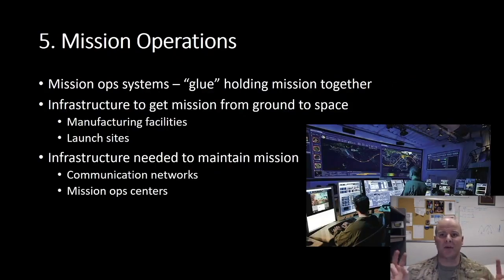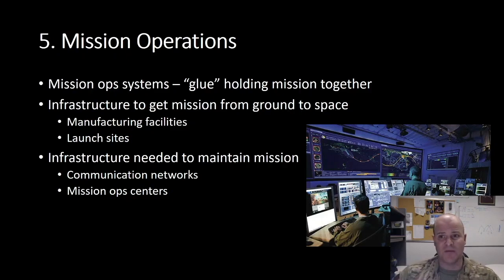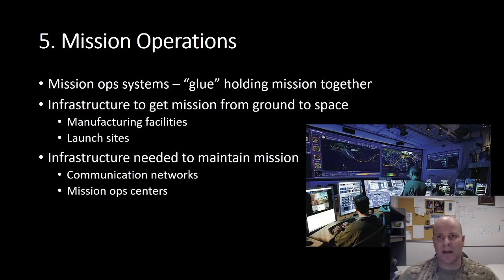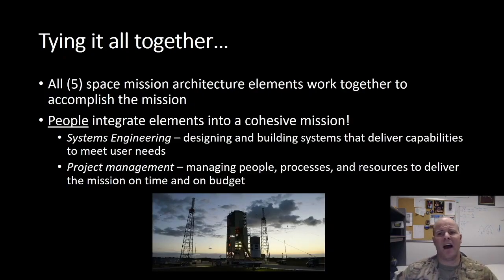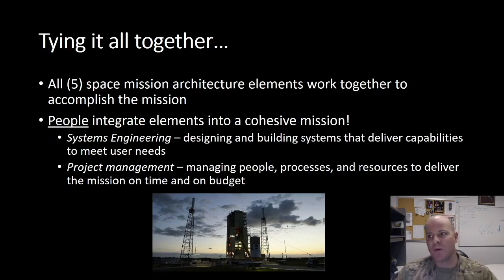Lastly, we have our mission operations category. This element is really the glue holding the whole mission together. It's the infrastructure we need to get the mission from ground to space, which can include manufacturing facilities and launch sites. We also have infrastructure to maintain our mission once satellites are in orbit, including communication networks and mission ops centers. People are the key ingredient, using systems engineering processes — designing and building systems that deliver capabilities to meet user needs — and project management, managing people, processes, and resources to deliver the mission on time and on budget.